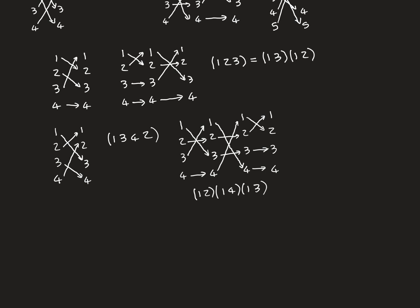To construct this 4-cycle from transpositions, we start by transposing 1 and 3, which gets 1 going to the correct place. Then we transpose 1 and 4, which gets 3 going to the correct place. Then we transpose 1 and 2, which gets 4 going to 2 correctly — and then 2 must end up going to 1, which is also correct. So this 4-cycle can be written as the composition (1 3) then (1 4) then (1 2), a total of three transpositions.